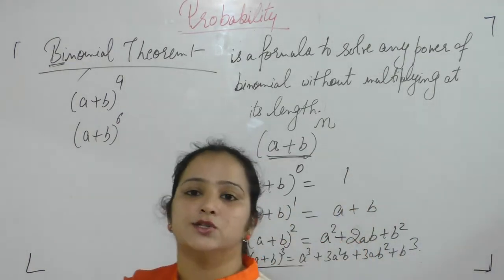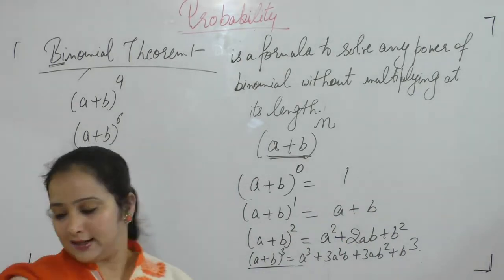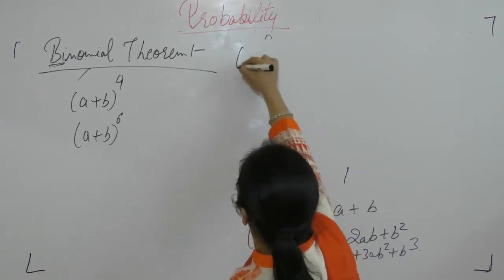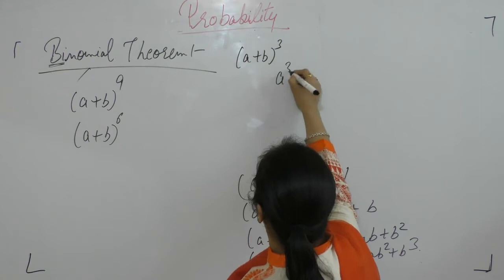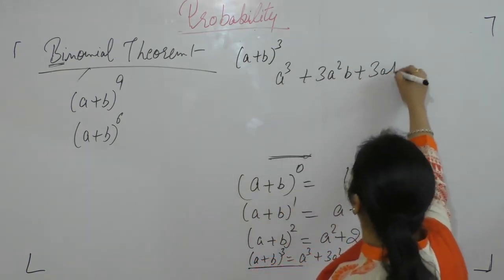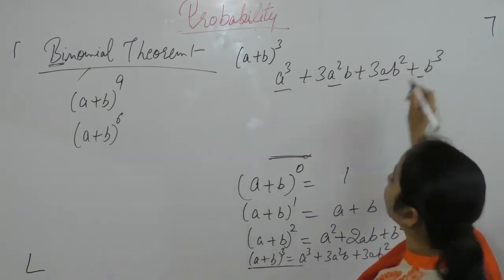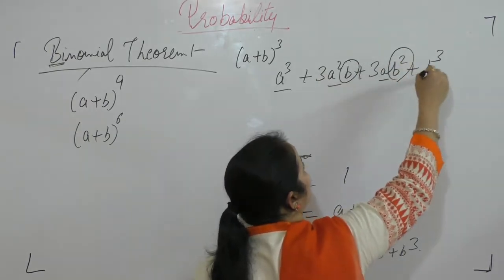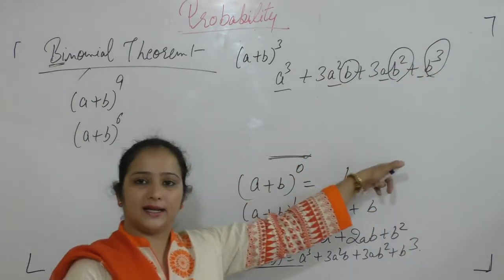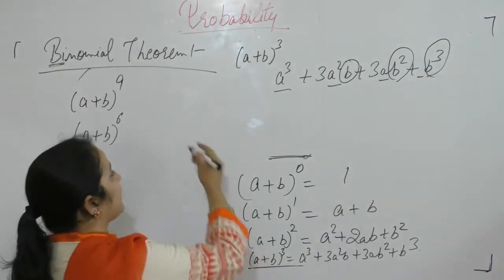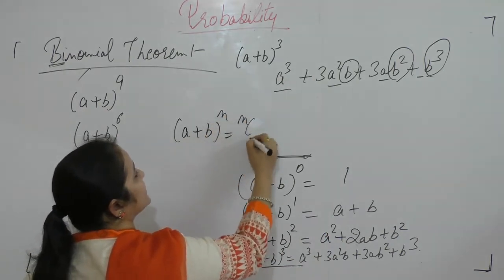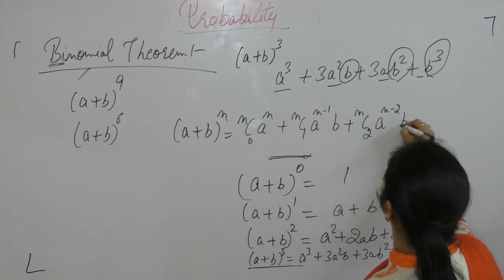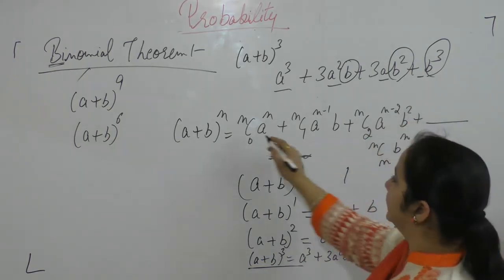So how can we solve these higher power values? We use the binomial theorem. For A plus B whole cube: A cubed plus 3A squared B plus 3AB squared plus B cubed. Notice the power of A is decreasing while the power of B is increasing. The general formula is: nC0·A^n + nC1·A^(n-1)·B + nC2·A^(n-2)·B² + ... + nCn·B^n.